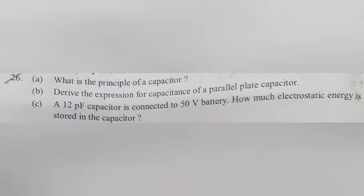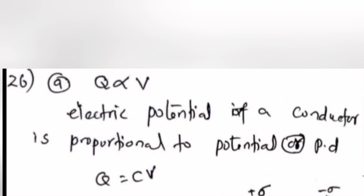Question 26A: What is the principle of a capacitor? Answer: Q is directly proportional to V. Electric potential of a conductor is proportional to potential or potential difference. Q equals CV.